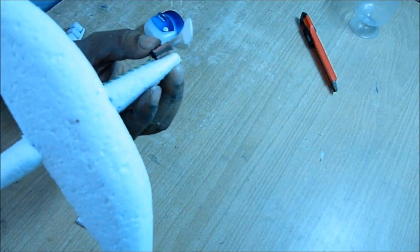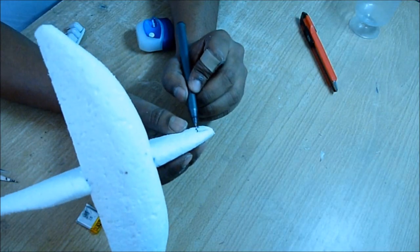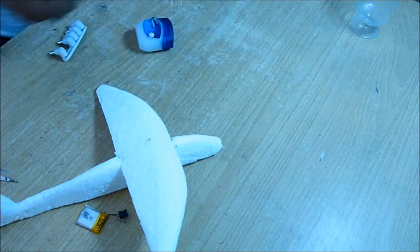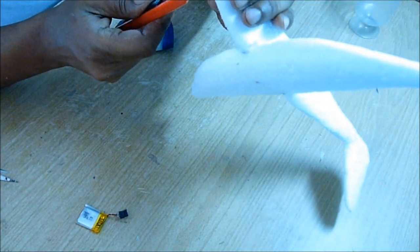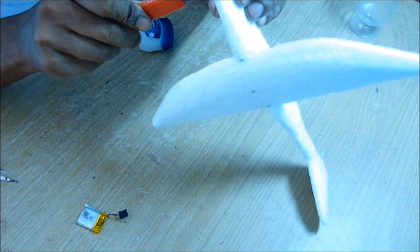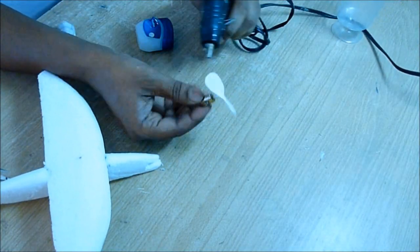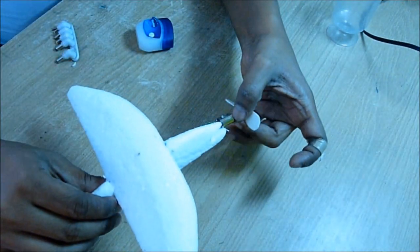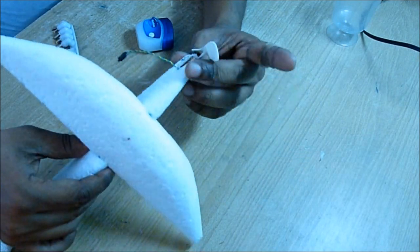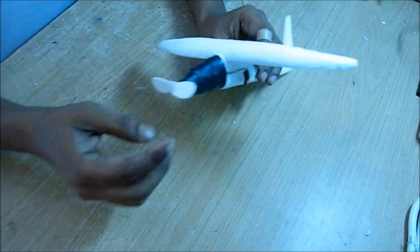We are going to fix the motor at the front of the aeroplane, so cut a groove at the front and glue the motor into the groove. Once dried, I put some black tape to tightly fit it and also put the battery in a groove and hide it.